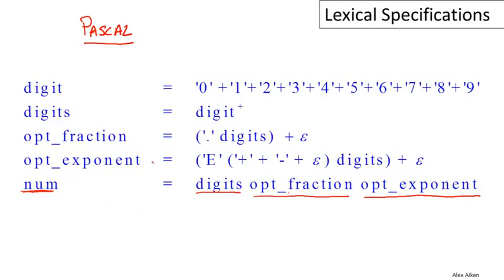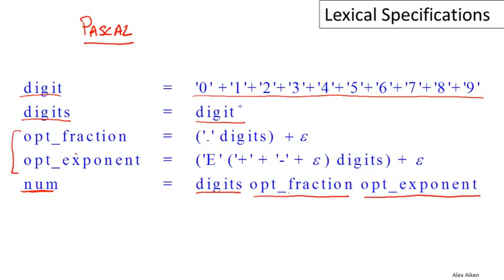Let's work from the bottom up. A single digit is the union of all the common digits, just as we'd expect, and a non-empty sequence of digits is digit-plus. Now the interesting bit is how the optional fraction and optional exponent are defined. Inside the fraction: if we have a decimal fraction, there's going to be a decimal point followed by a string of digits — this is the fractional part of the floating point number, the stuff after the decimal point. What's 'plus epsilon' doing here? Well, plus is union and epsilon is the empty string. So this says either the fractional portion is present or it's completely absent — this is how you say something is optional: write out the regular expression for the thing and then union it with epsilon.